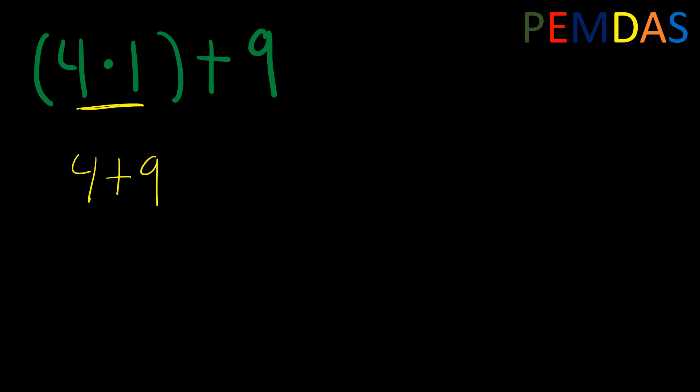So now we have 4 plus 9. We don't have any exponents, there is no multiplication, there's no division. There is addition left to do. So what's 4 plus 9? That's 13 — so that would be the answer.